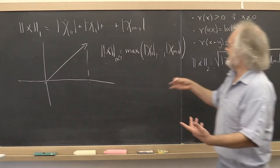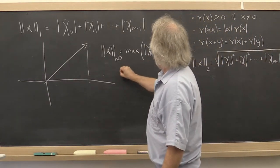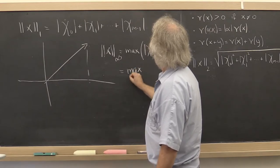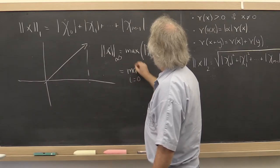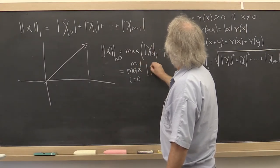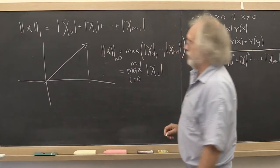Okay? And it's starting to get a little annoying writing this always, so we can also write this as the max from i equals 0 to n minus 1 of the absolute value of the ith component.